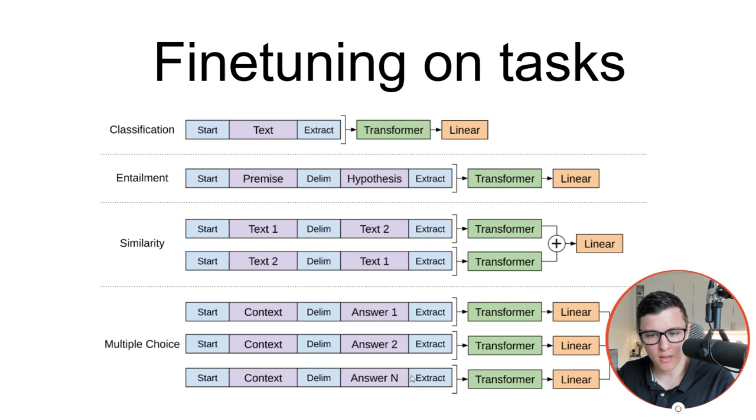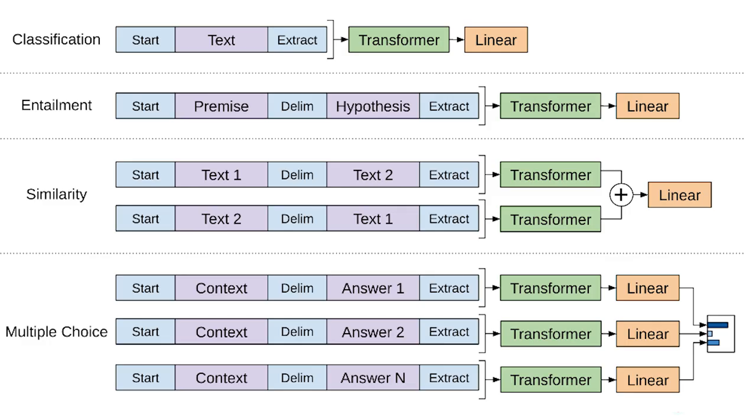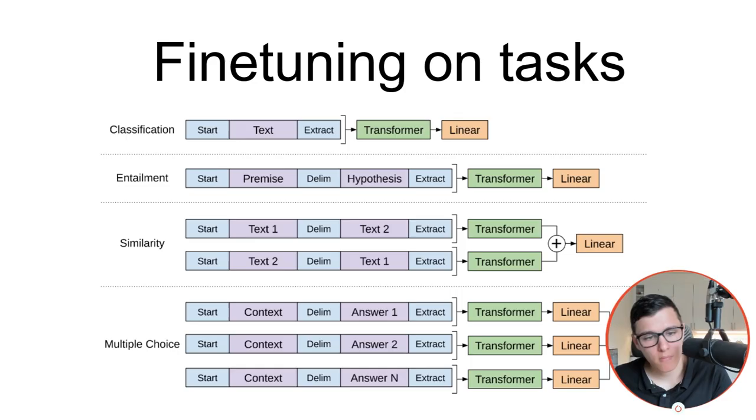If we have multiple choice, we have multiple different answers given a context. Then you basically run each of them through a transformer and through a linear layer, and then you get a probability of how good this answer is to this context. Then at the end you take the one that has the highest probability.